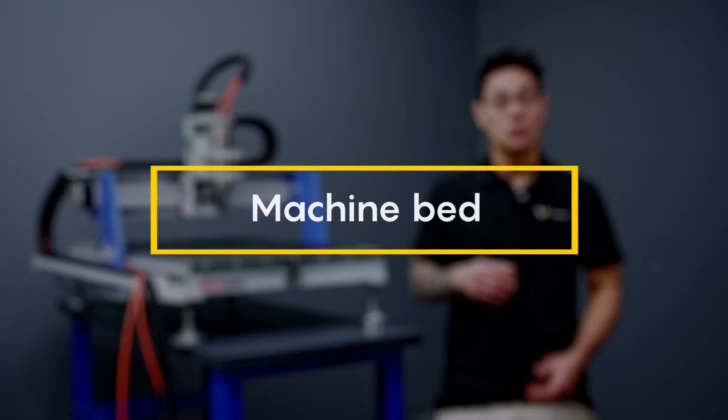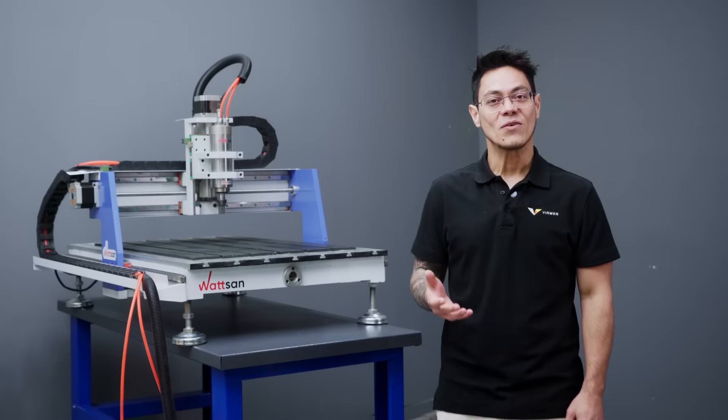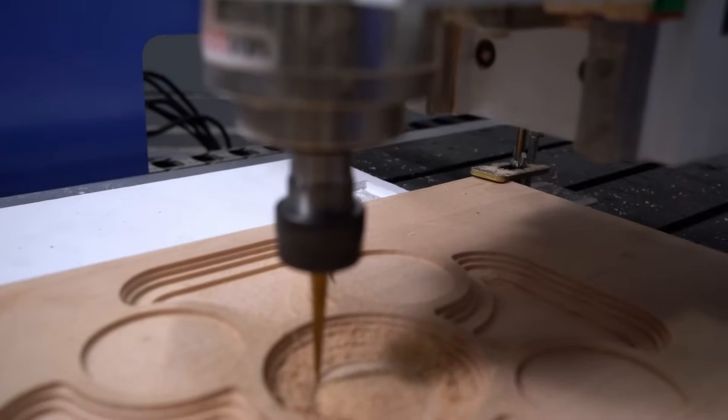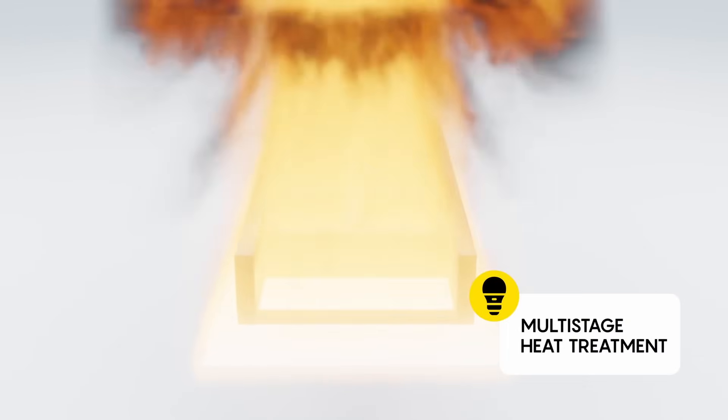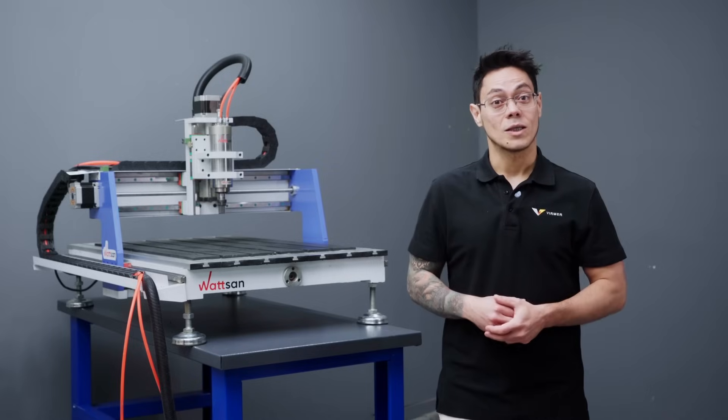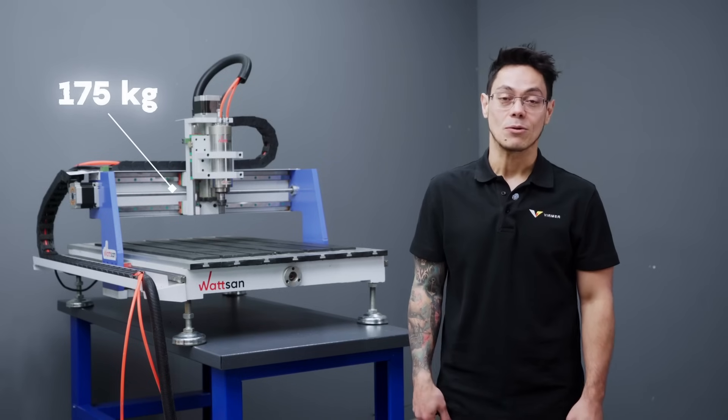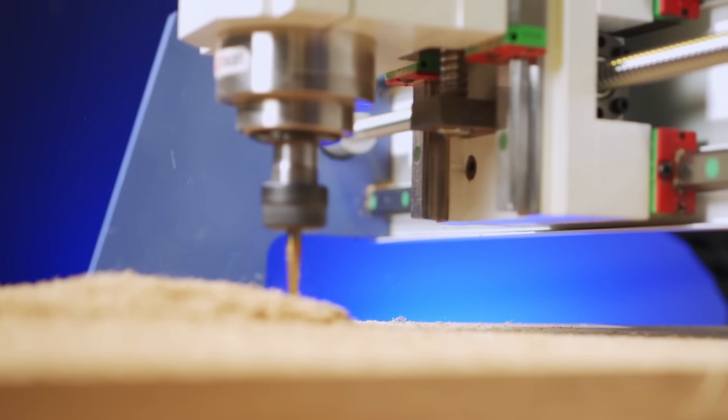Firstly, the machine bed. If you look at other small CNC router models, you will often notice a flimsy structure which won't meet your precision needs. The Watson's 0609 mini, however, boasts a cast iron machine bed that undergoes multiple stages of heat treatment, just like all other Watson machines. This gives the 0609 mini an impressive weight of 175 kilograms, ensuring reliable spindle performance without vibration.